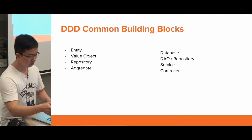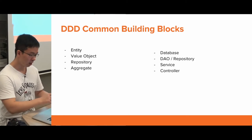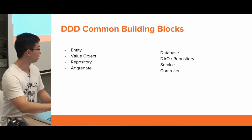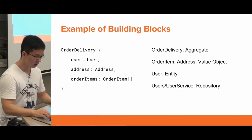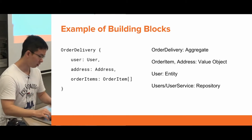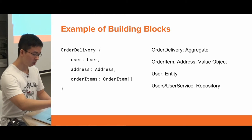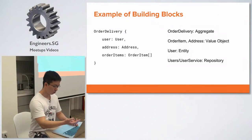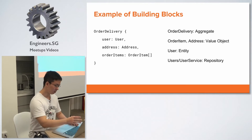On the right side you can see in our development world we have a database, a data access object or repository, a service layer, and a controller. Usually the aggregate happens at the service or controller level. Here's an example: we have order delivery, which contains a user, a restaurant, and the ordered items. The order delivery is an aggregate. The order items address does not have an ID - it's just a simple value object. The user can be fetched from the user repository or user service by user ID, so the user is an entity.